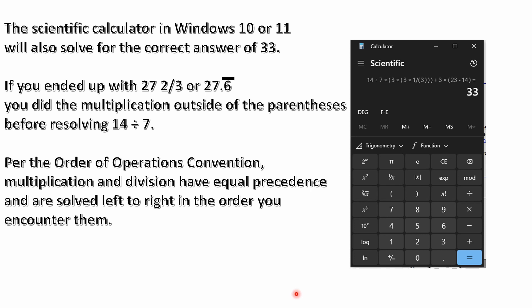And before I do run, though, I wanted to say I forgot to mention that there's some confusion on calculators, and especially if you're using a computer. The scientific calculator that you'll find in Windows 10 or 11 will also solve for the correct answer of 33, as you see here. If you ended up with something like 27 and 2 thirds or 27.66 repeating, you did the multiplication outside of the parentheses before resolving 14 divided by 7.